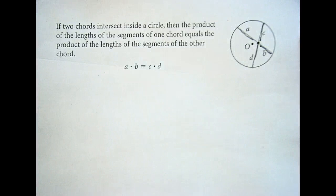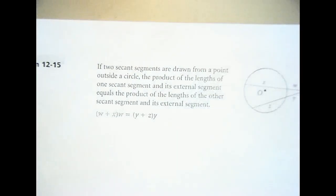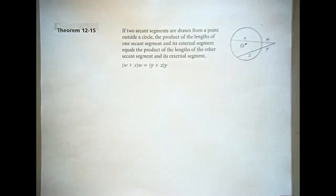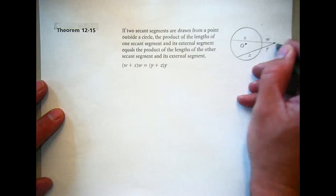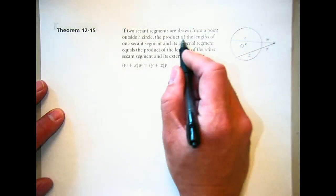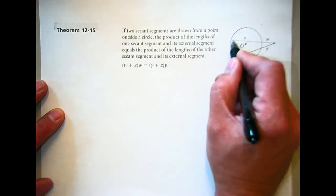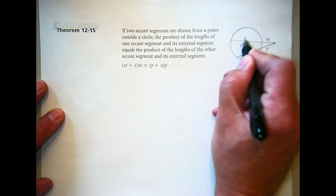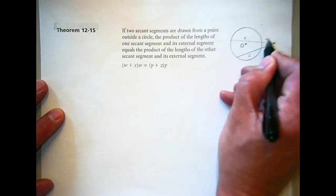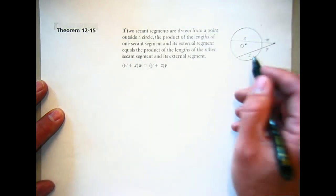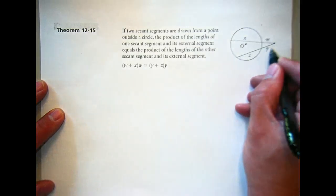Theorem 12-15: if two secant segments are drawn from a point outside a circle, the product of the lengths of one secant segment and its external segment — in other words, we've got to add these two up and then multiply by the outside one. That's what's happening here: w plus x, times w, is equal to the product of the lengths of the other segment and its external segment. So you're adding and multiplying by the outer part on each of them.